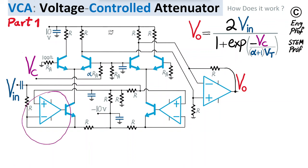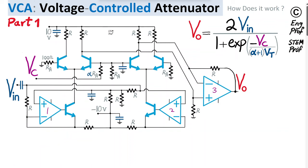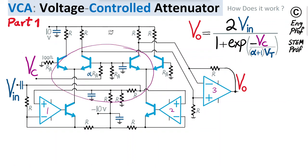The circuit is implemented with two operational amplifiers — Op Amp 1 and Op Amp 2 — at the input, and a final Op Amp 3 at the output, which generates V_out. The control voltage in this case is a negative voltage. It is possible to design a variation of this circuit that works with a positive control voltage, which I'll discuss in Part 3.